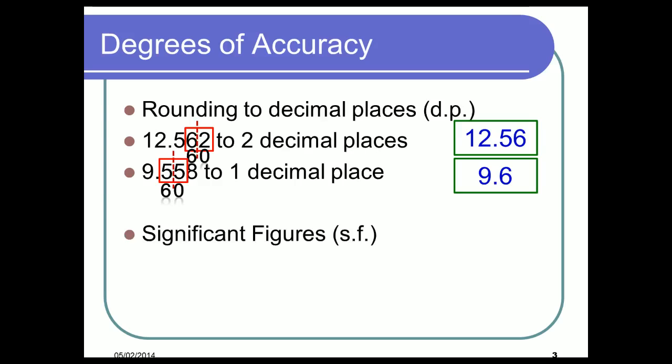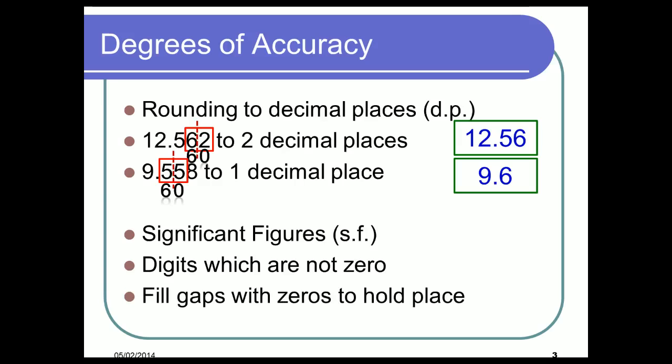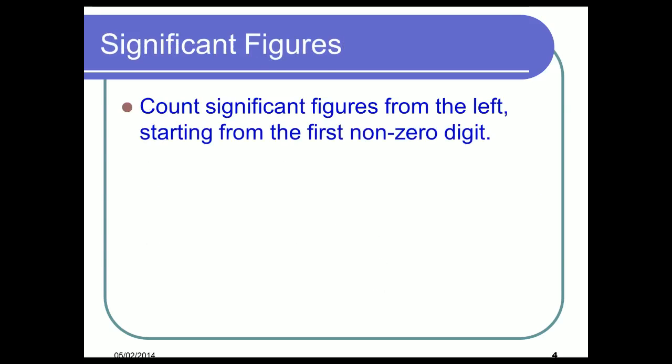The second method we're going to do is significant figures, and it's like decimal places. But we count digits from the left which are not zero to be our first significant figure, and we fill gaps with zeros that hold the place value. Now those two things might not make an awful lot of sense until I show you some examples. So let's go — count significant figures from the left starting with the first non-zero digit.